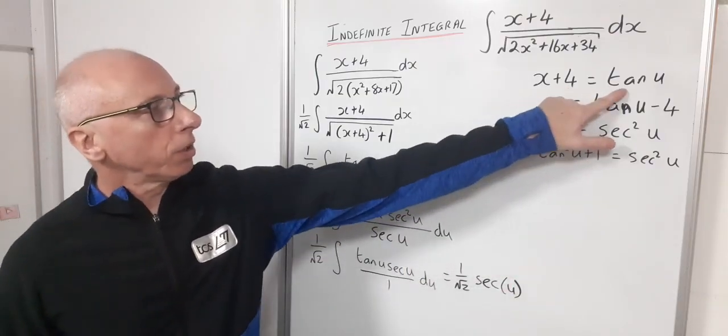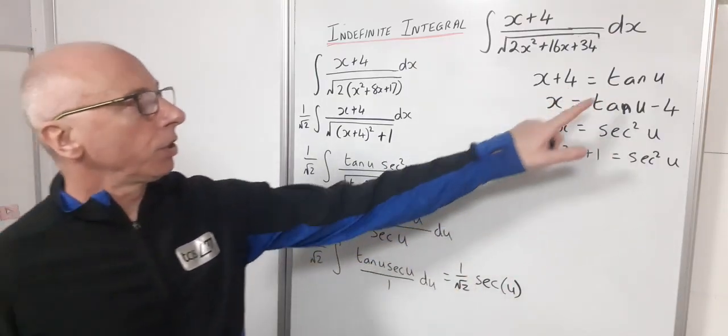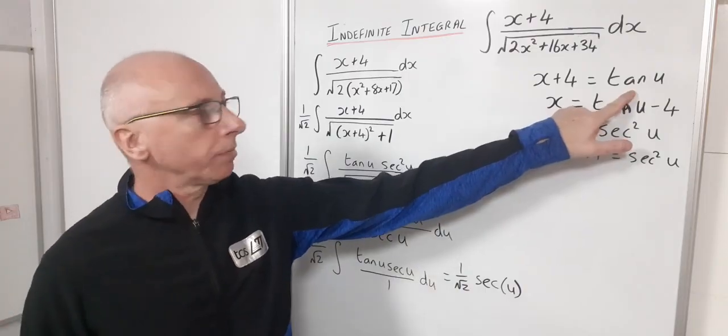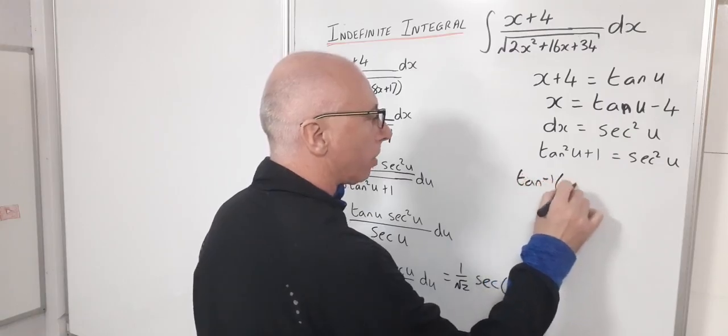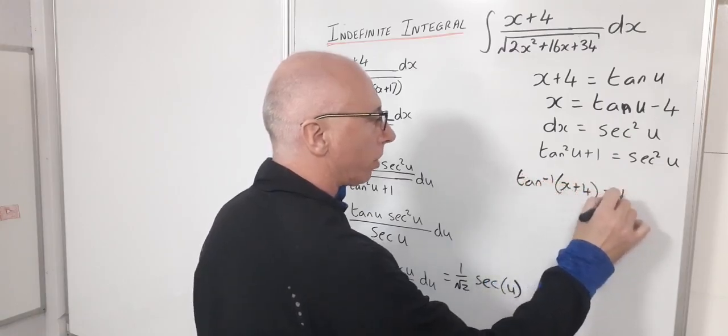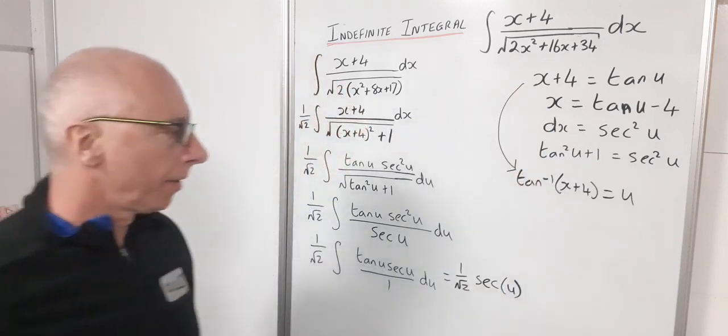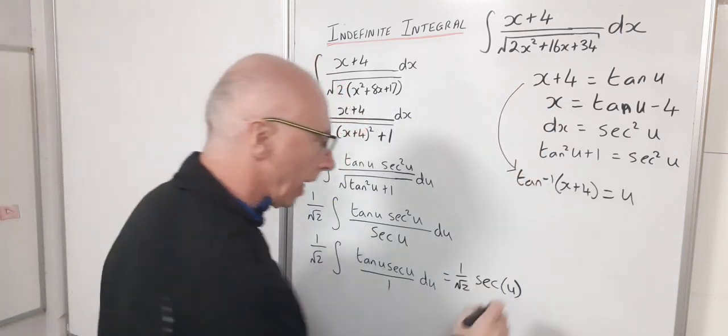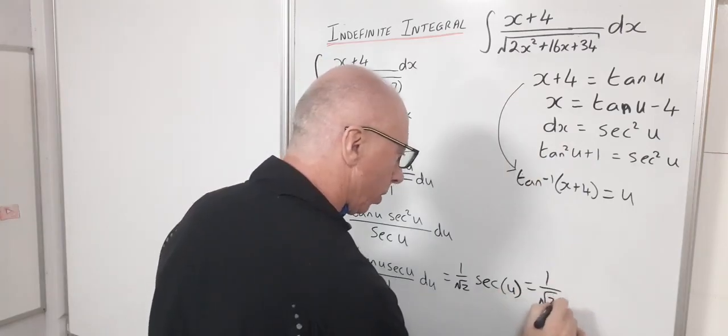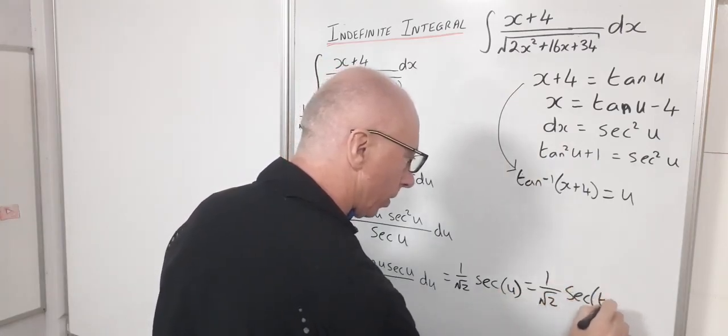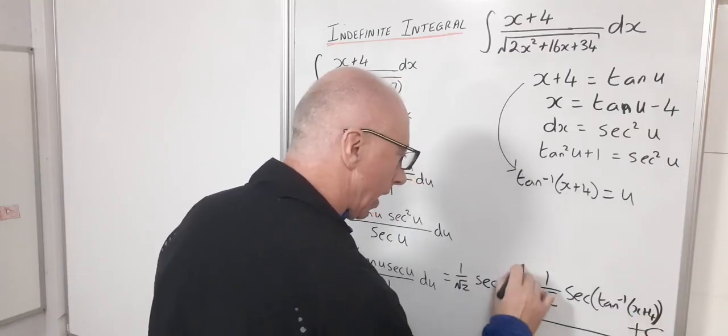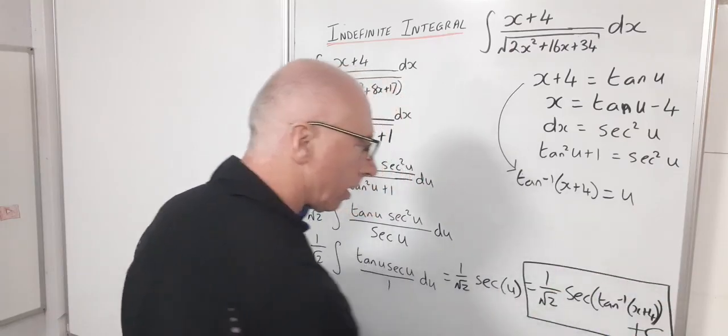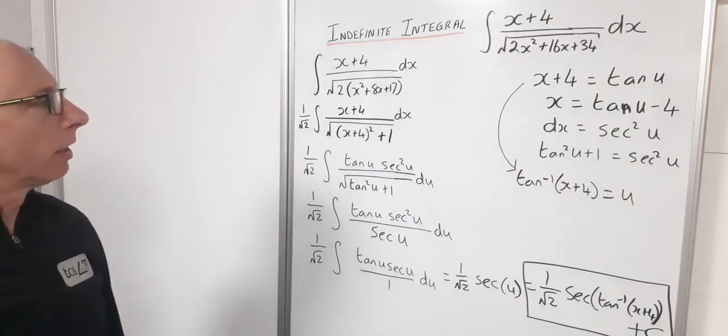Now what is my u? I've got to isolate it from in here. Well to do that I'm going to take the inverse tangent of both sides. So then I'll have inverse tangent of x plus 4 equals u. So then what I will get now is 1 over root 2 secant of the inverse tangent of x plus 4 and then at the end of that I've got my plus c. And that will take me to the end of my result of my integration.